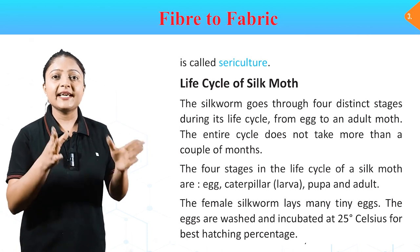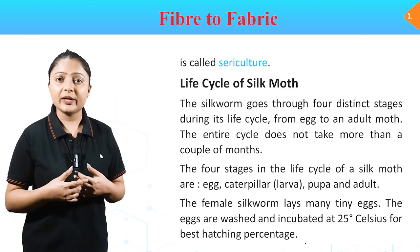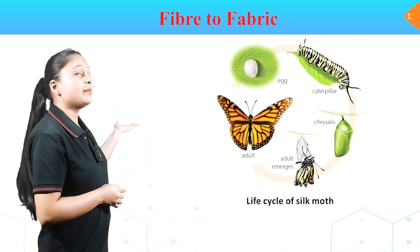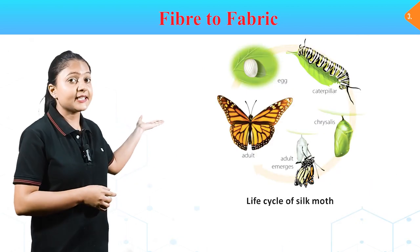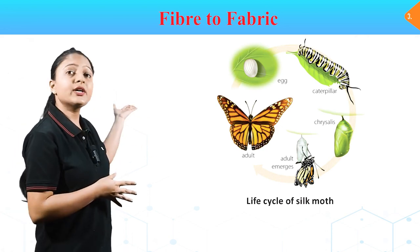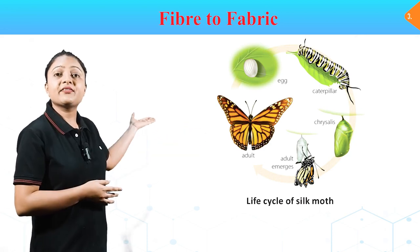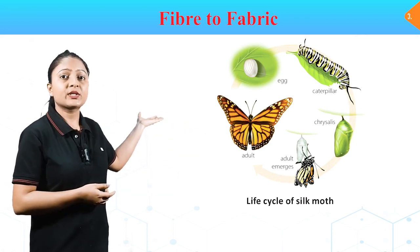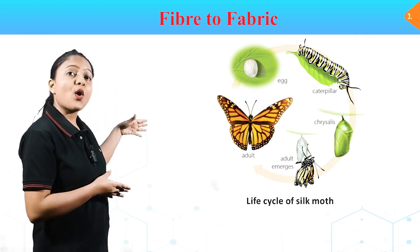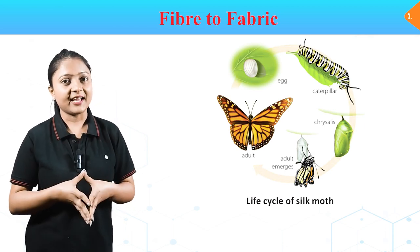The female silkworm lays many tiny eggs. The eggs are washed and incubated at 25°C for the best hatching percentage. In this image we can see the silk moth's four life cycle stages: the egg becomes a caterpillar, then develops into a chrysalis, and finally emerges as an adult moth.